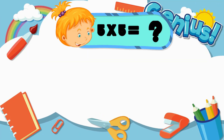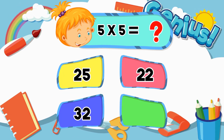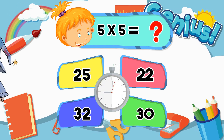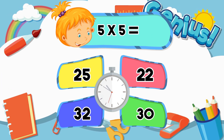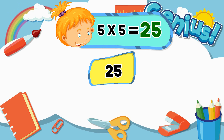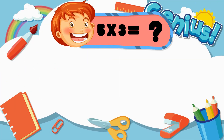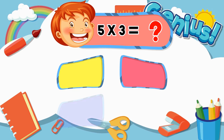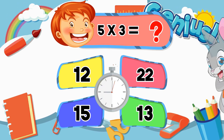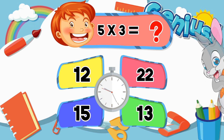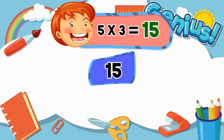What is 3 times 6? What is 5 times 5? 5, 20, 22, 32, 30. What is 5 times 3? 12, 22, 15, 13. 15.